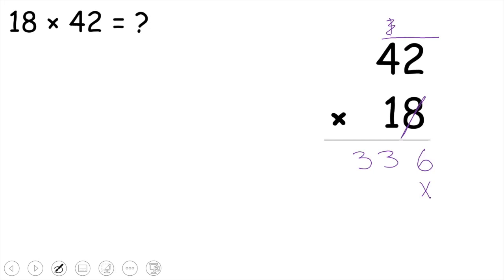Okay now we do 1 times 2 which is 2 and we do 1 times 4 which is 4. Now that's all of our numbers so now what we need to do is we need to add. So we have 6 plus 0 which is 6, 3 plus 2 which is 5, and 3 plus 4 which is 7. And there's our final answer 756.